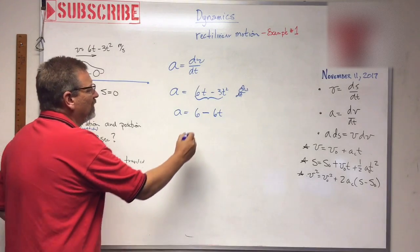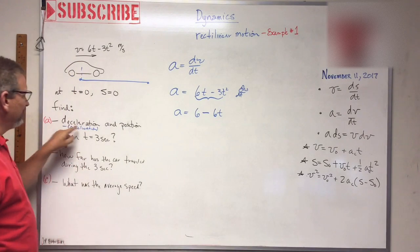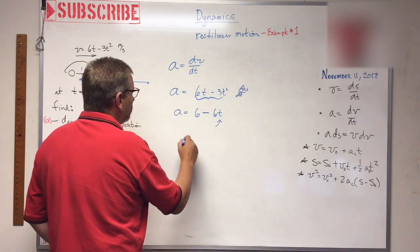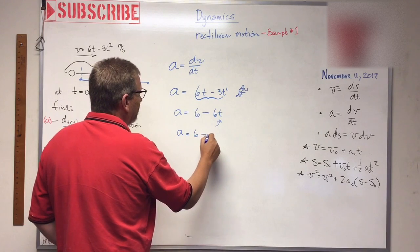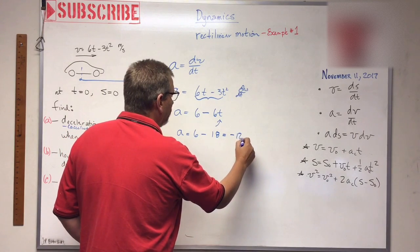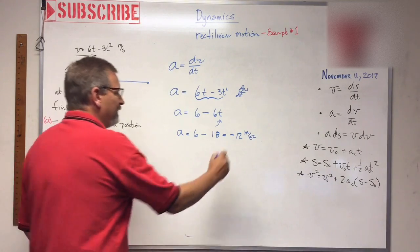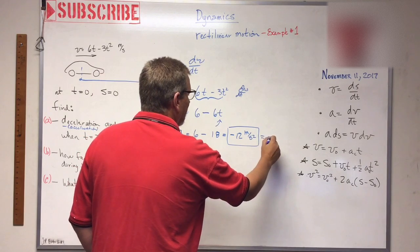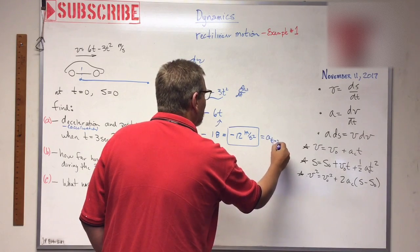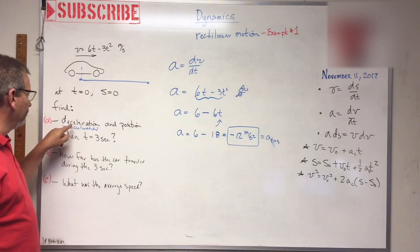So there's an equation for acceleration at any time. What time do you want to use? They say find the deceleration in the position when t equals 3 seconds. So if we put a 3 right there, what do we get? The acceleration is equal to 6 minus 18, which is equal to minus 12, and that's going to be meters per second squared. So that is the acceleration, A at time t equals 3 seconds. That's the deceleration. Obviously the negative tells us it's decelerating.